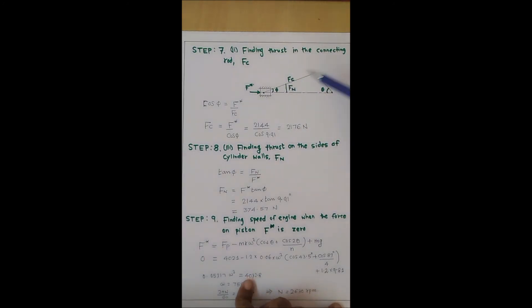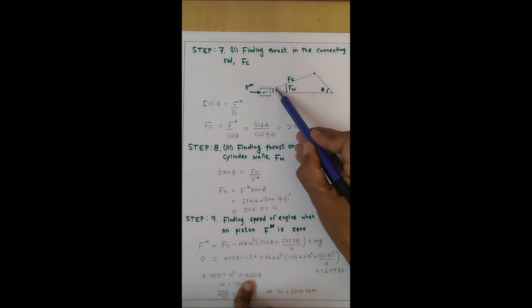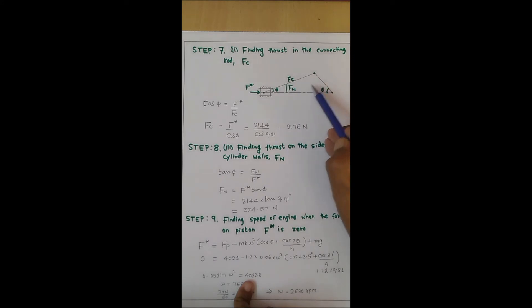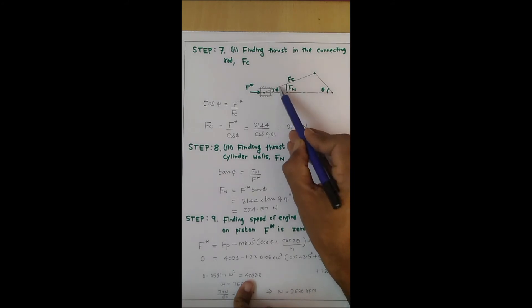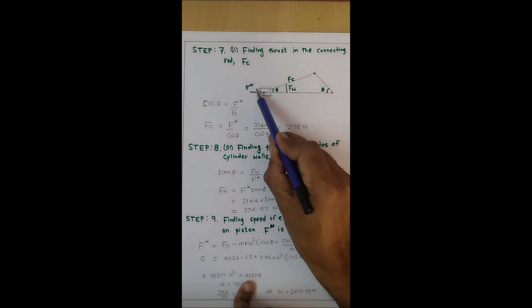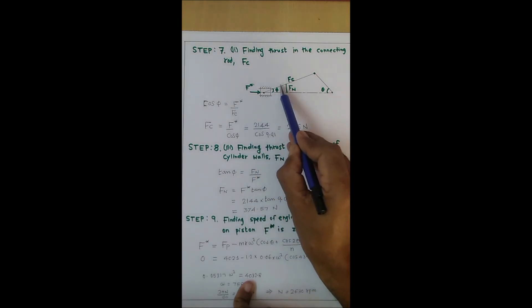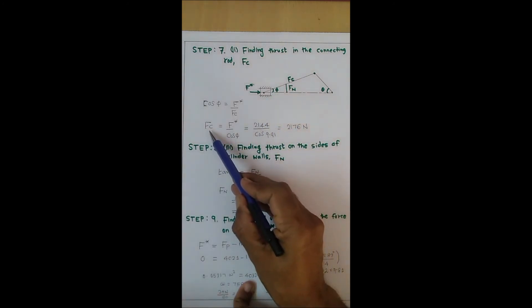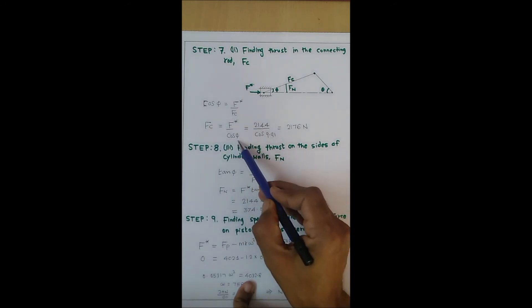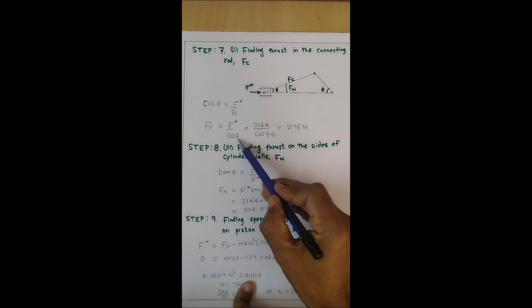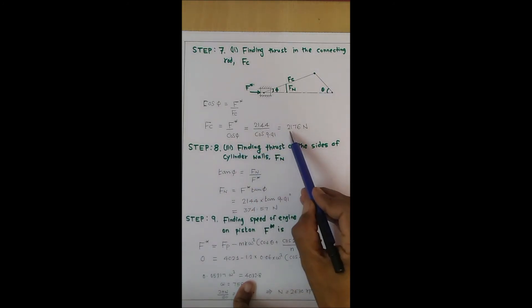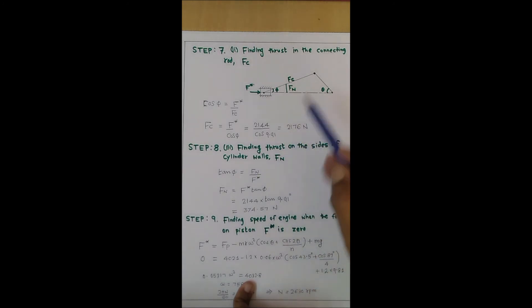Step 7 is finding the thrust in the connecting rod, Fc — the force acting along the connecting rod. Using trigonometric relations on the right-angle triangle formed: cos φ = adjacent/hypotenuse = F*/Fc. Therefore Fc = F* / cos φ. With F* = 2144 N and the known value of cos φ, we can calculate Fc — the thrust acting on the connecting rod.